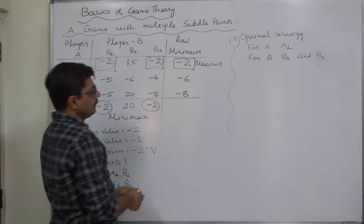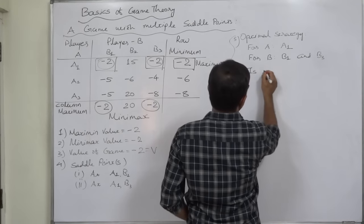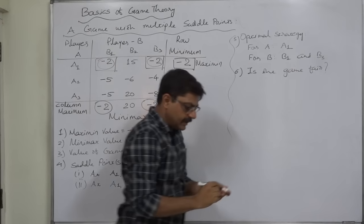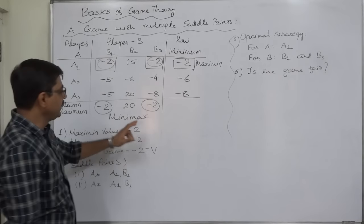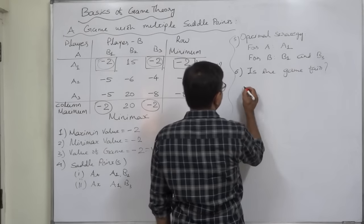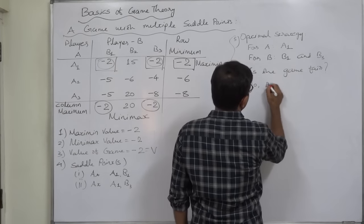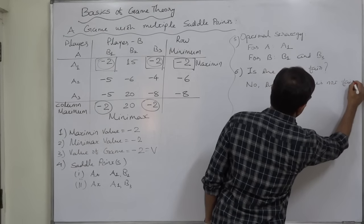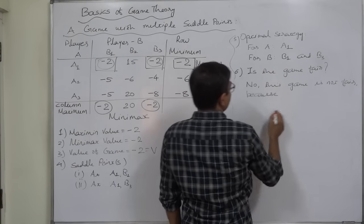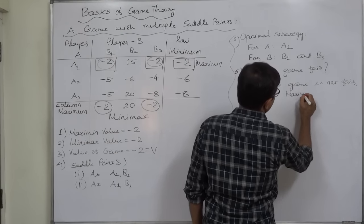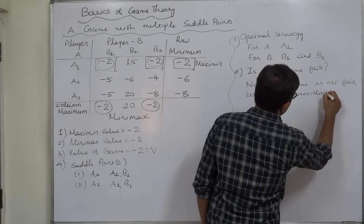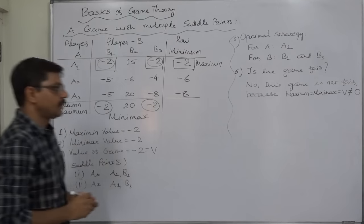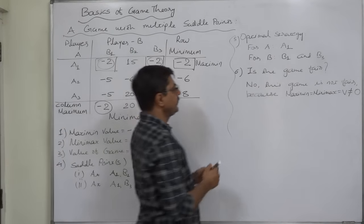Now, is the game fair? A game can be said to be fair only if maximin equals minimax equals value of game equals zero. In this case, the answer is no — this game is not fair because maximin equals minimax equals value of game equals minus 2, which is not equal to zero.